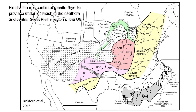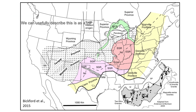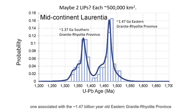The Mid-Continent Rhyolite Province underlies much of the southern and central Great Plains region of the United States. We can usefully describe this as a LIP — it encompasses about a million square kilometers, or maybe two closely associated LIPs: one associated with the approximately 1.47 billion-year-old eastern Granite Rhyolite Province, the other associated with the approximately 1.37 billion-year-old southern Granite Rhyolite Province.